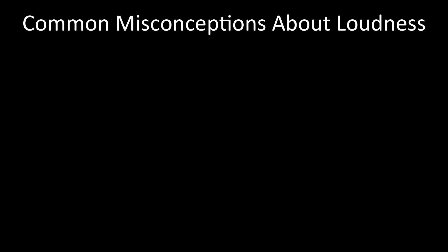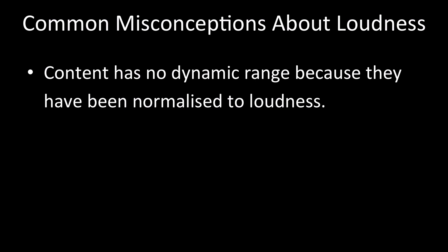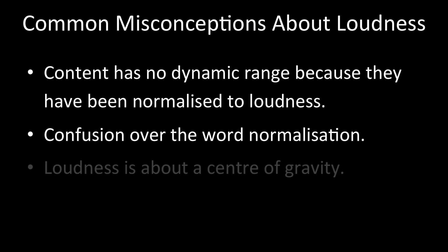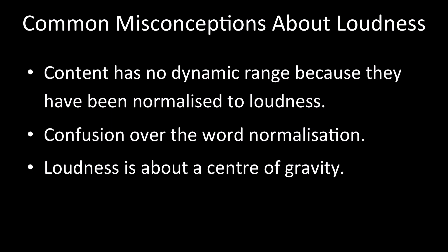Before we finish, I'd just like to touch on a few misconceptions that have arisen around working to this new loudness standard. Firstly, some people have assumed wrongly that content normalised to loudness has no dynamic range, and I believe this misconception has grown out of a misunderstanding about normalisation. We've got so used to normalising up to a maximum with peak normalisation, whereas loudness is all about a centre of gravity — the average of the whole programme. Of course, to have an average there must be both lower and higher values, which together produce an average somewhere inside the range between the highest and the lowest. Just as every object has its own centre of gravity, which won't always be in the middle, so every programme will have an integrated loudness figure — the average for the whole programme — but the overall position of that average will vary depending on the shape of the programme. And that's OK — in fact, it's more than OK. It's the way it's meant to be.